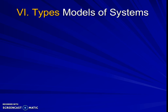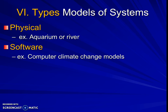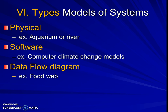When drawing these models, there are different types. A physical model is one you actually build — like an aquarium or a jar — or you could physically observe a river as a system. Some people make systems on the computer, especially for climate change modeling. And we did a couple of examples today of actual data flow diagrams — for instance, a food web is a data flow diagram.